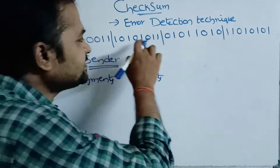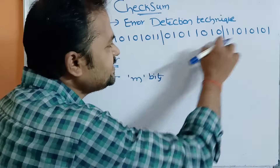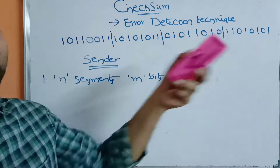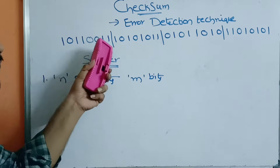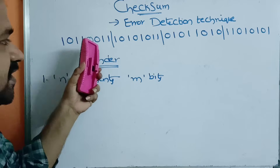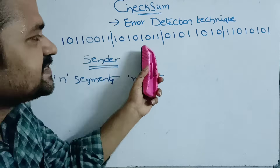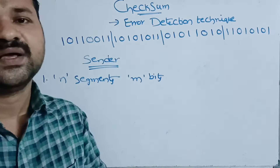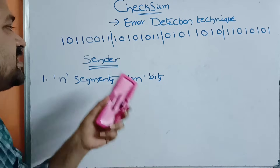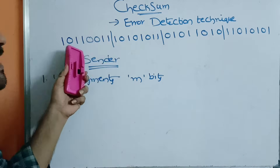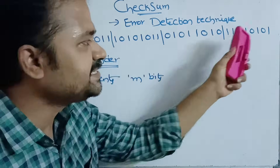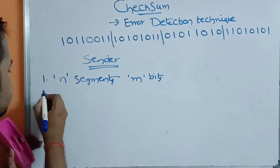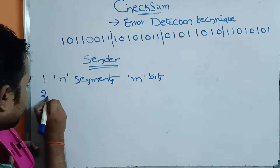Here the size of the message is 32 bits. It is divided into 4 segments — segment 1, segment 2, segment 3, segment 4 — where each segment size is 8 bits.